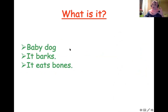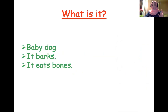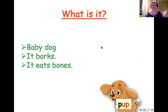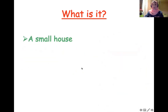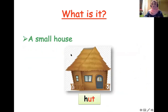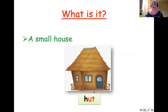A baby dog is called what? A baby dog — of course it barks and it eats bones. It's called a pup. A small house is called a hut.